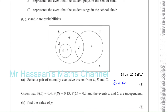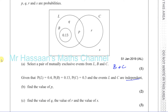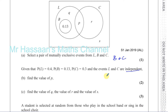Part B says: given that the probability of L is 0.4, the probability of B is 0.13, the probability of C is 0.3, and the events L and C are independent, find the value of P. When two events are independent of each other, the probability of L intersection C is going to be the same as the probability of L times the probability of C.